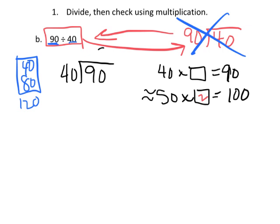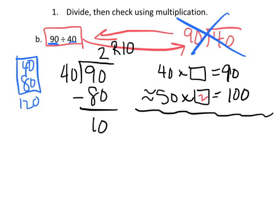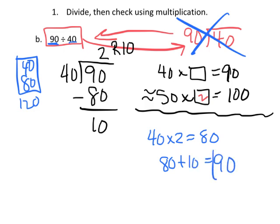So that's 80 right here and we subtract, and so our answer is 2 remainder 10. Then it says we're supposed to use multiplication to check it. Since we've got 2 remainder 10, the way to check it is to say 40 times 2 is 80, and then 80 plus our remainder which happens to be 10 is equal to 90. And since we got 90 here and we were dividing into 90, that's confirmation that we've done it correctly.